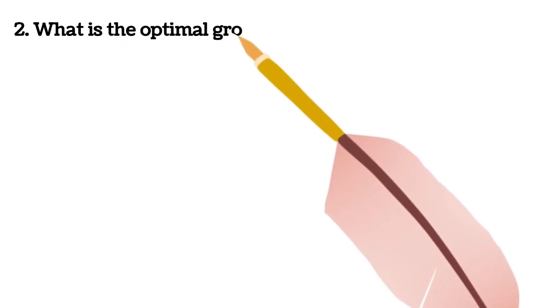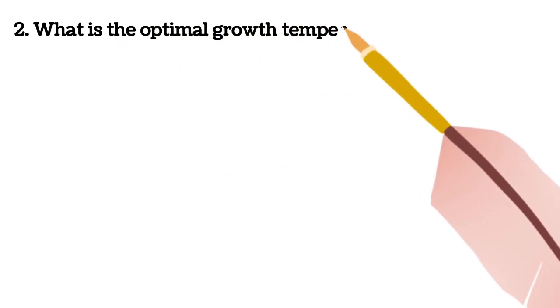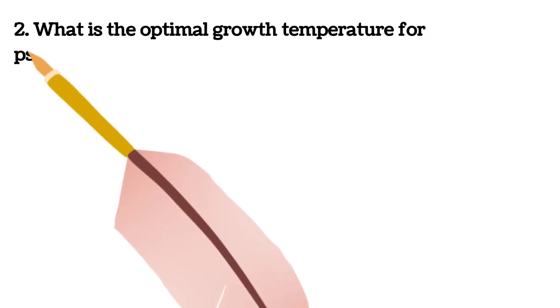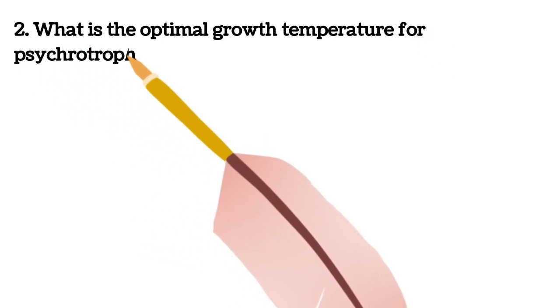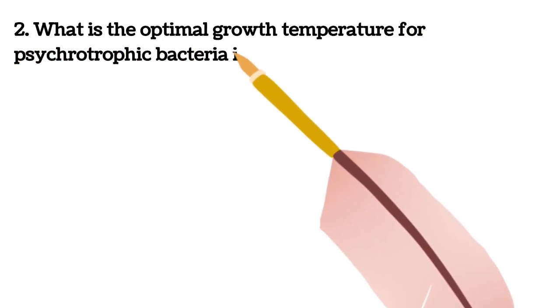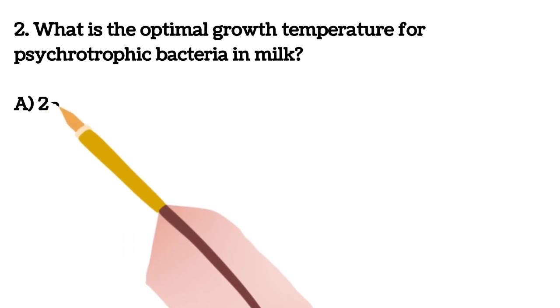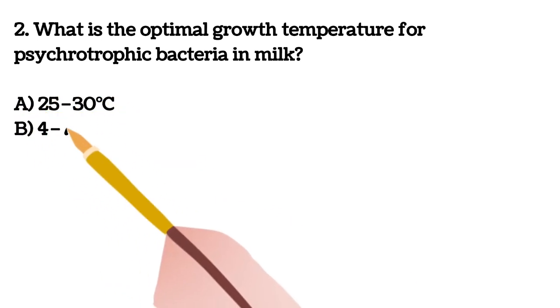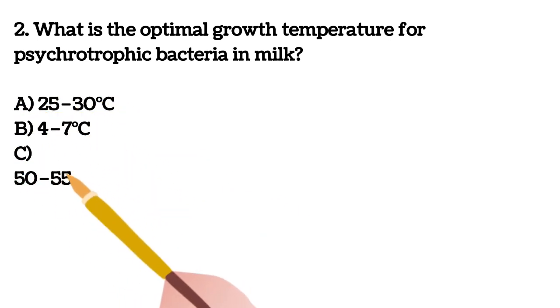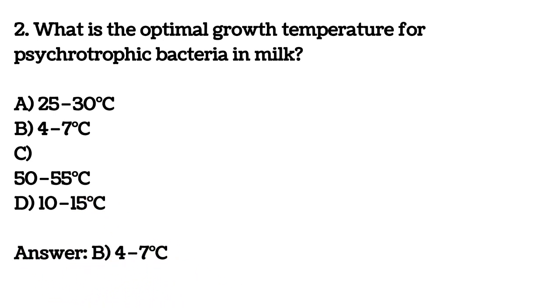Second question. What is the optimal growth temperature for psychotropic bacteria in milk? A. 25 to 30 degrees Celsius B. 4 to 7 degrees Celsius C. 50 to 55 degrees Celsius D. 10 to 15 degrees Celsius. Your answer is B, 4 to 7 degrees Celsius.